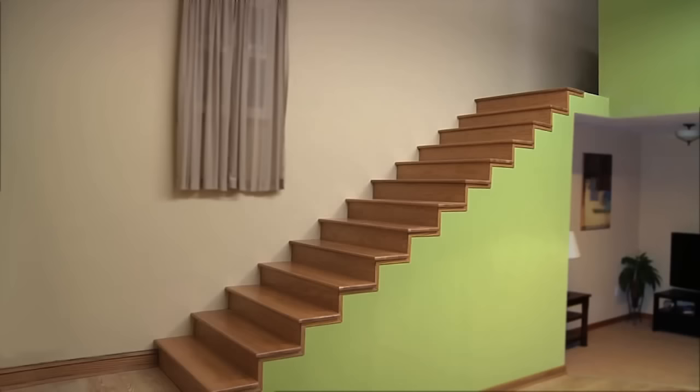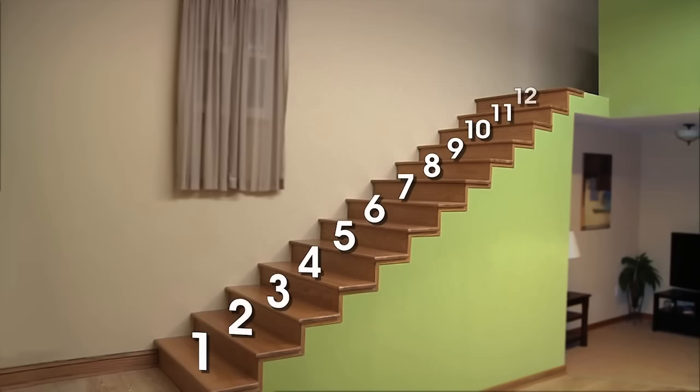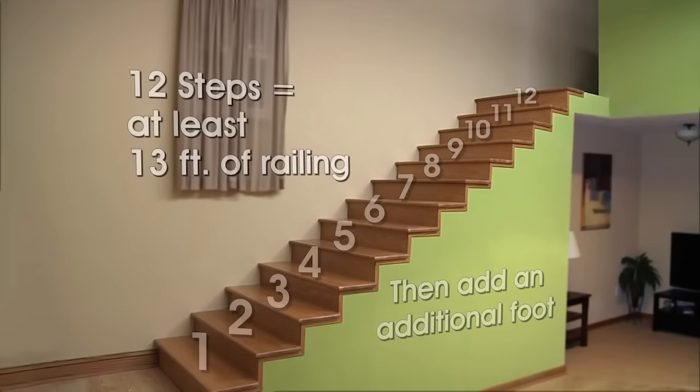Start by counting the number of steps you have in your staircase. For most residential staircases, count each step as one foot, then add an extra foot to figure out how long of a railing you'll need. For example, for 12 steps, you should purchase at least 13 feet of railing.